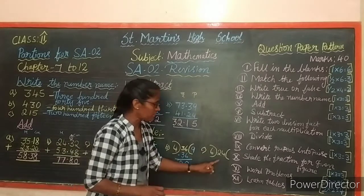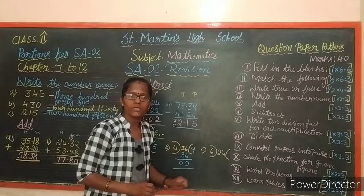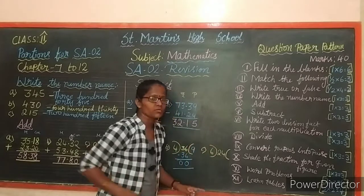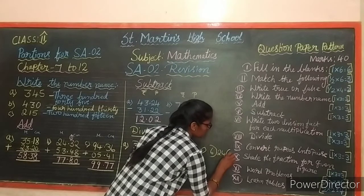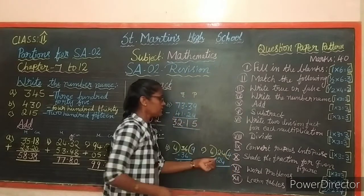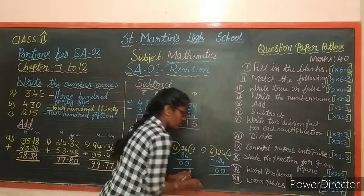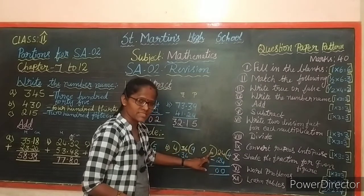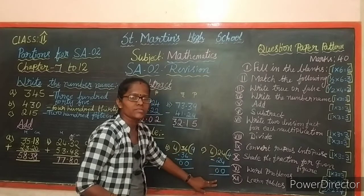Next: 24 divided by 6. Use the 6 times table. 6 fours are 24. Subtract: 4 minus 4 is 0, 2 minus 2 is 0. Remainder is 0 and quotient is 4.